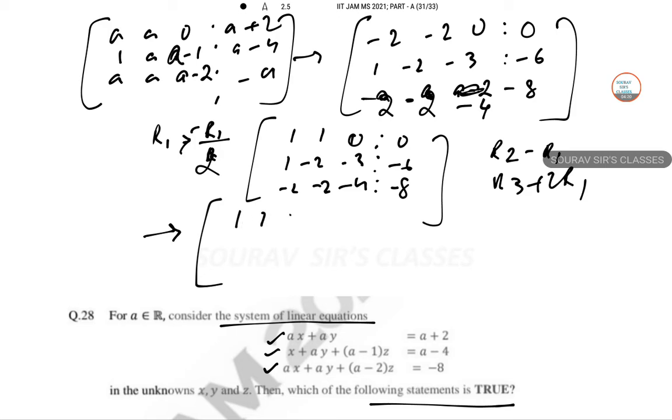So 1, 1, 1, 0, 0, 0, 0, 0, 0, 0, minus 3, minus 3, minus 6, 0, 0, 0, minus 4, minus 8.